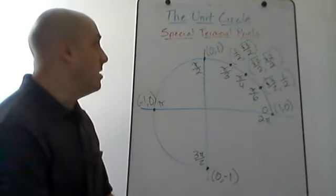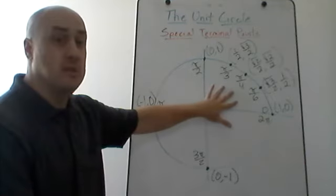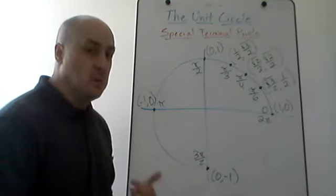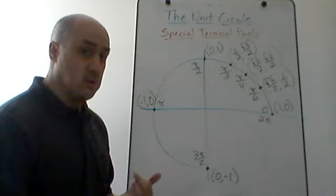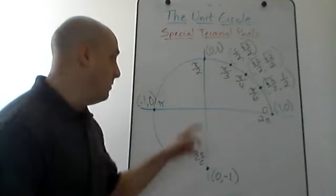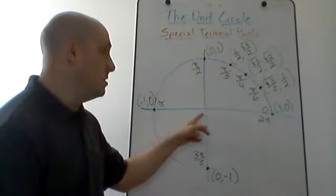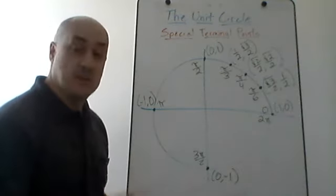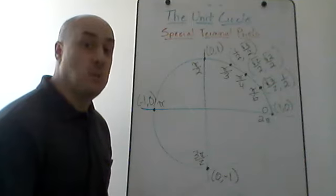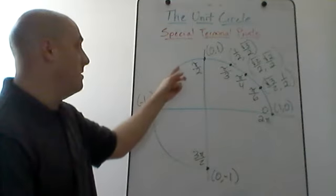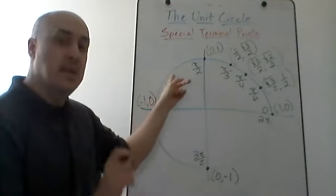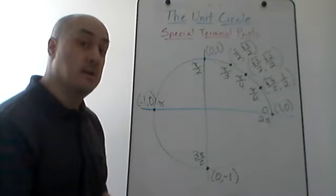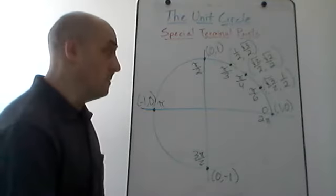Here we're going to talk about some special terminal points that are just in the first quadrant. Quick review: the unit circle is the circle of radius 1 with the center at the origin. The equation for the unit circle is x squared plus y squared equals 1. So if you take any point on the unit circle and take the x and y coordinates, x squared plus y squared is always going to equal 1.